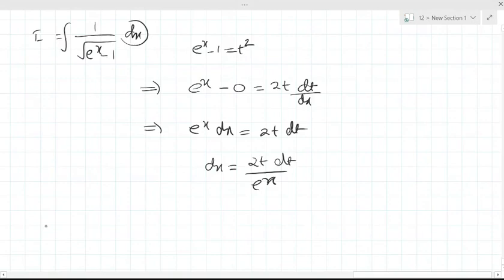Now, I will be 1 upon under root of t square into value of dx, and value of dx is 2t dt upon e to the power x, which is not in terms of t only. It is having t as well as x. So x should be eliminated.